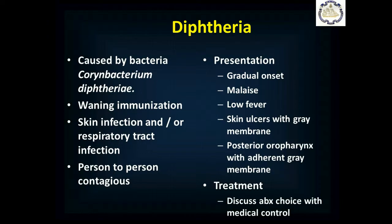Diphtheria is a bacterial infection caused by Corynebacterium diphtheriae. We are all immunized against it, and tetanus updates include re-immunization, but immunity wanes. Some people — particularly in some ports you may visit — have never been immunized. It can be a respiratory tract or skin infection and is person-to-person contagious. Gradual onset of feeling lousy with low fevers; skin version shows skin ulcers with gray membranes; respiratory version shows a gray membrane stuck to the posterior oropharynx that is hard to scrape off and bleeds when you try. Treatment is antibiotics — talk to medical control for the best choice.